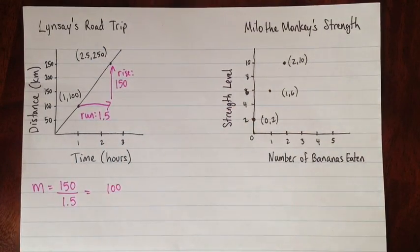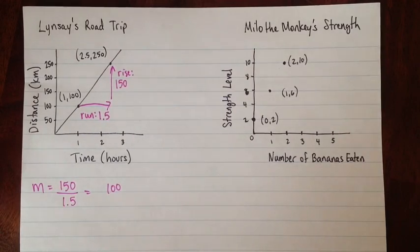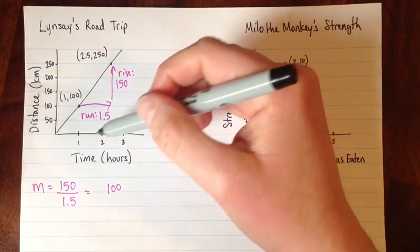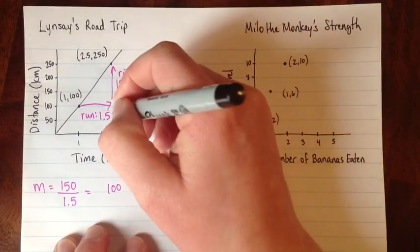Now what does that tell us though? It's kind of hard to tell unless you actually look at the units that we had. So we'll go back and we'll add in what the units were. So this run, the 1.5, what was the 1.5? Well, it was the time, that was hours, 1.5 hours.